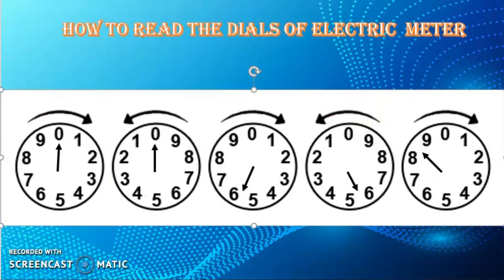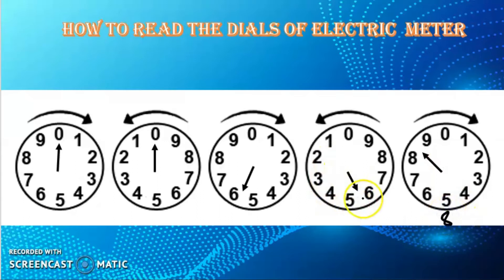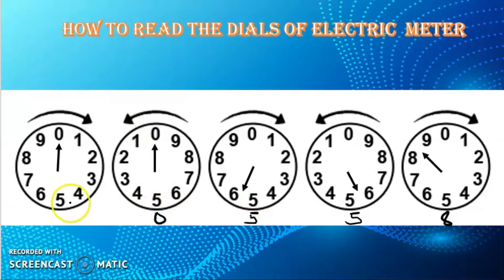Let's read another example. The first is between eight and nine — the lower is eight. Next is between five and six — the lower is five. Then we have zero and another zero. So the reading is 558 kilowatt-hours. Easy, right?